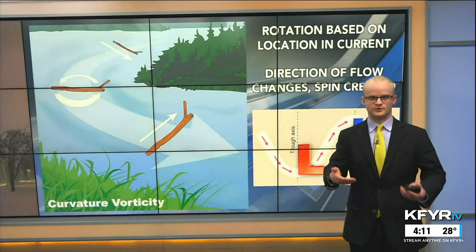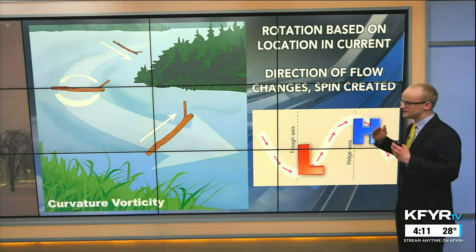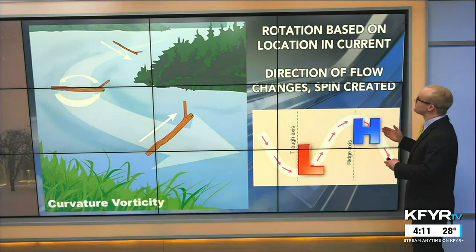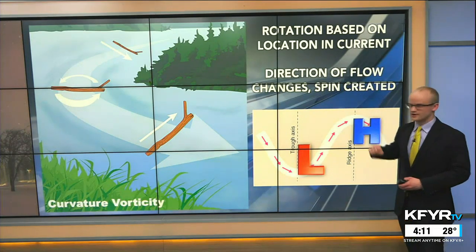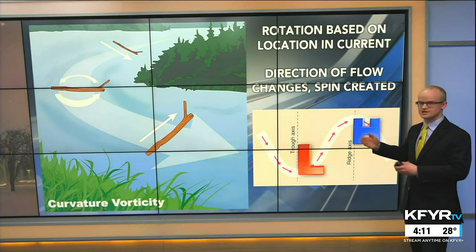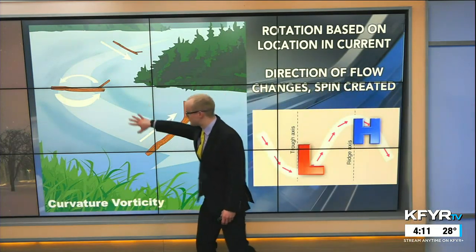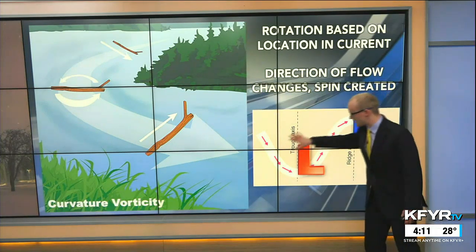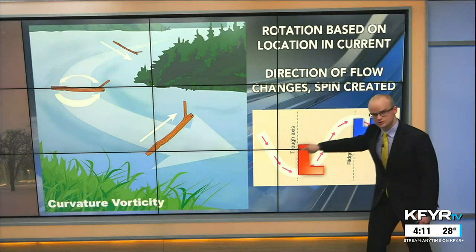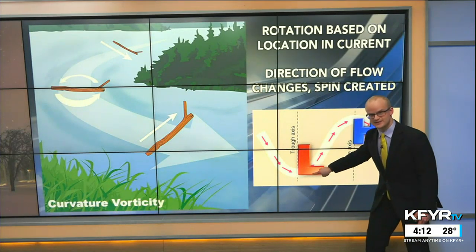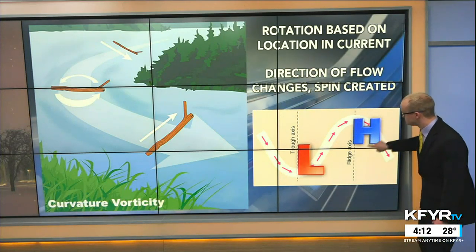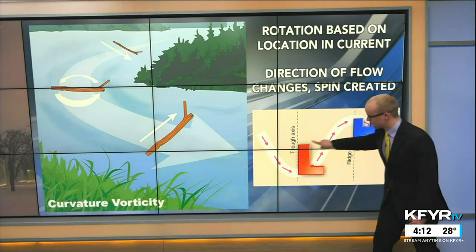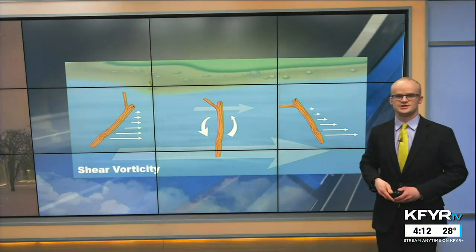So how do we create spin or vorticity in the atmosphere? Think of it like a river — because the atmosphere is a fluid, we can think of it like liquid as well. Rotation is based on location in our current, and the direction of flow changes that, which also creates spin. If a stick is flowing down the river, as that river curves the stick will start to rotate. Applying this to the jet stream: in these troughs we're creating counterclockwise spin — that's where our areas of low pressure form — whereas in the ridges we're creating clockwise spin, associated with high pressure and generally calmer weather. It's in these troughs where we get more counterclockwise spin, more storminess, more vertical motion, and more precipitation.